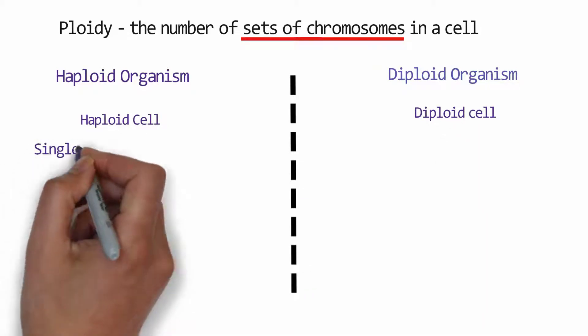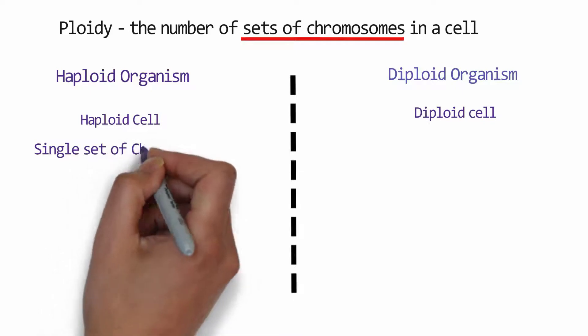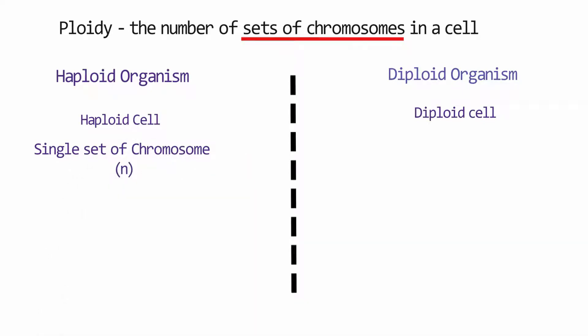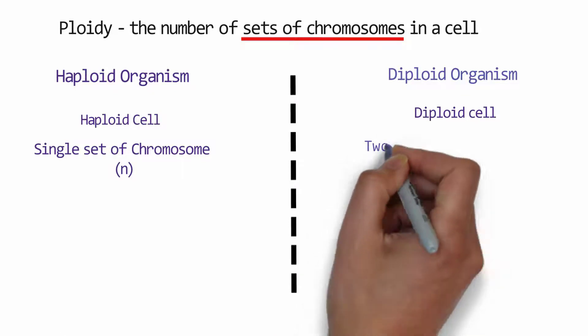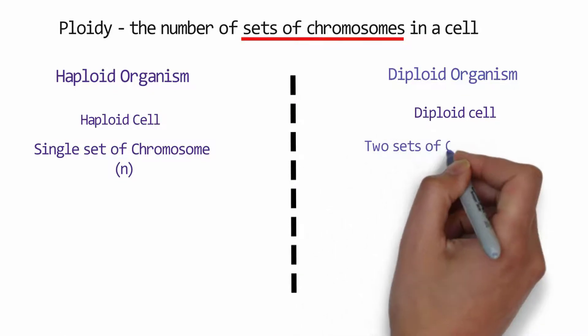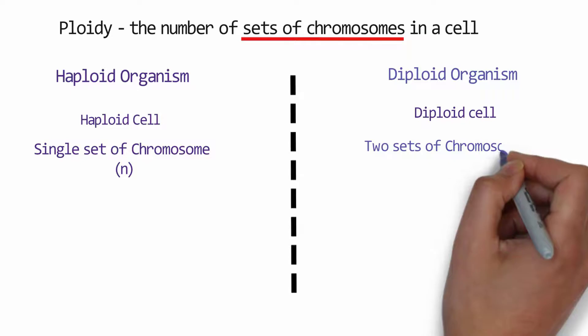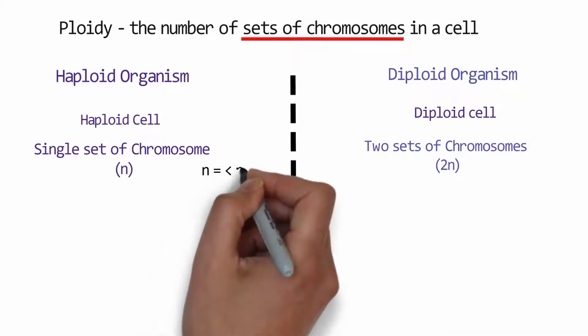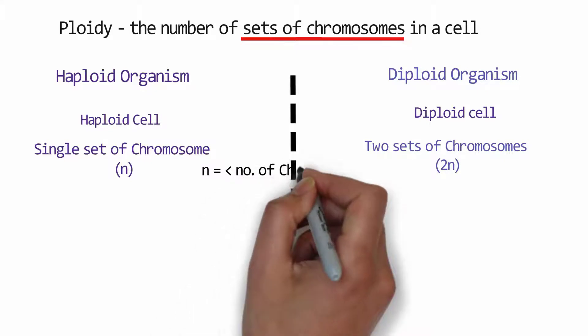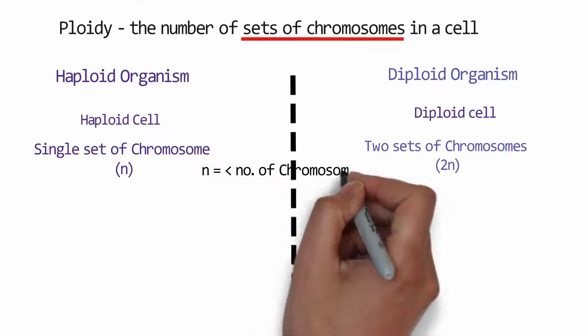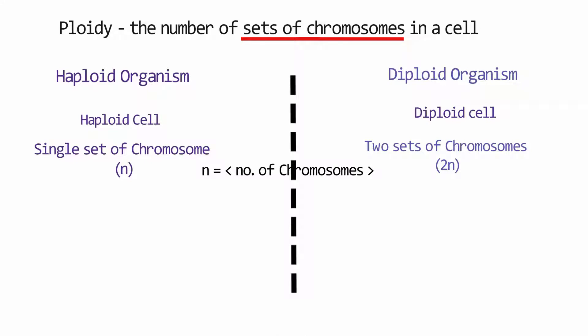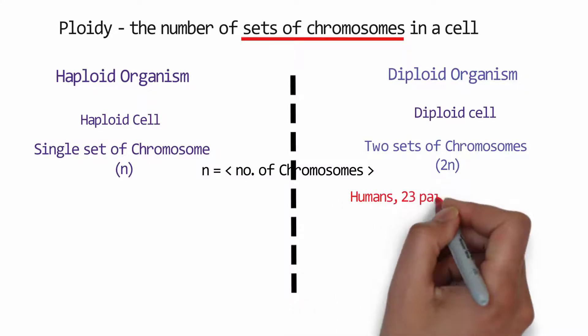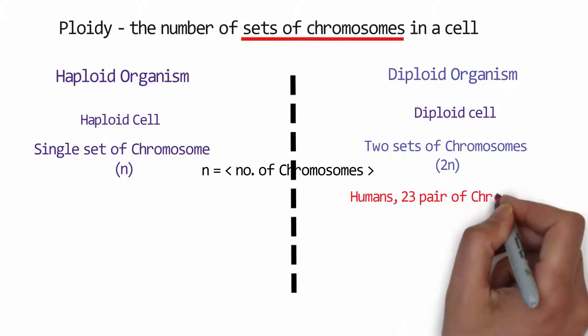Haploid cells are those cells which have a single set of chromosomes, while diploid means two sets of chromosomes. Haploid is denoted by n while diploid is denoted by 2n, where n is the number of chromosomes. Here we can clearly understand that haploid has a single set while diploid has two sets.